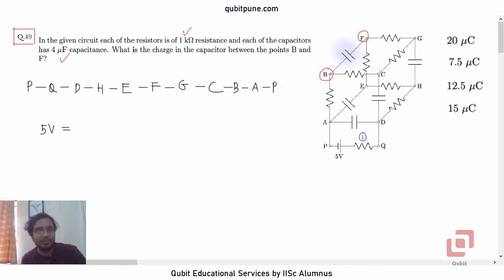Then C to G. Let us write it here. P to Q is 1. Q to D, no resistance. D to H is 2nd, H to E 3rd, E to F is 4th, F to G is 5th, G to C is 6th, C to B is 7th, C to B is 7th and B to A is 8th. No resistance between A and P.